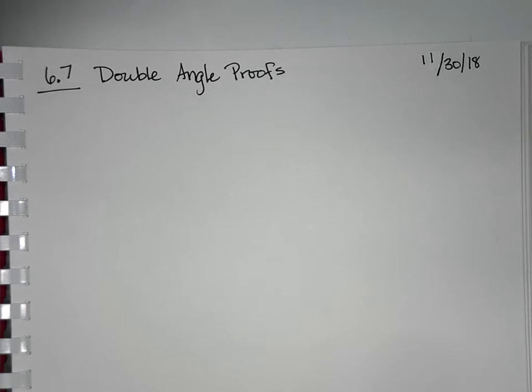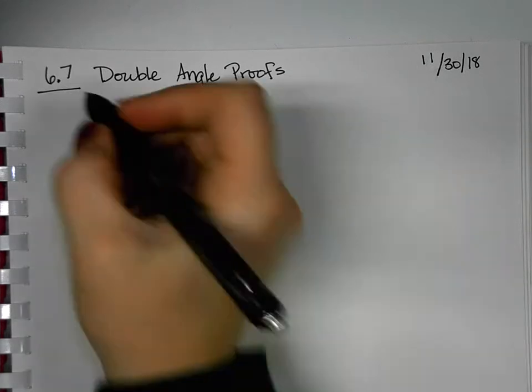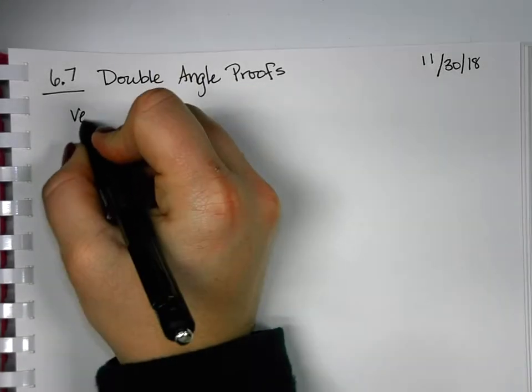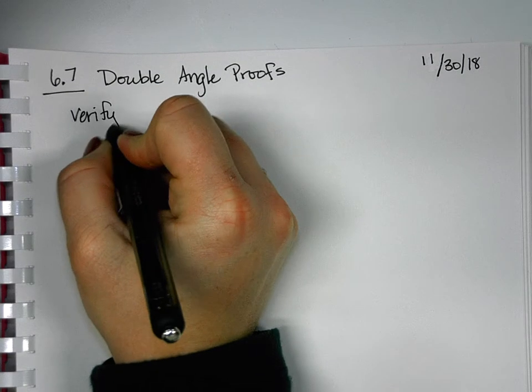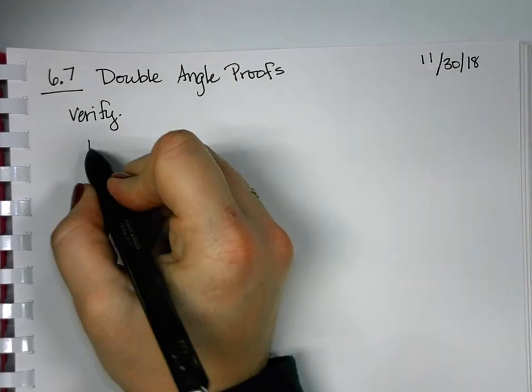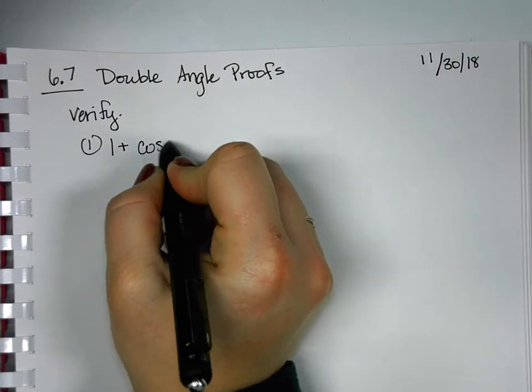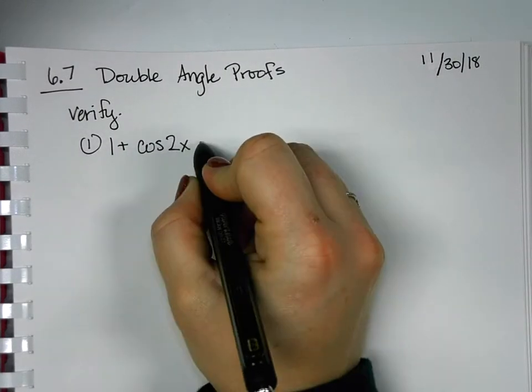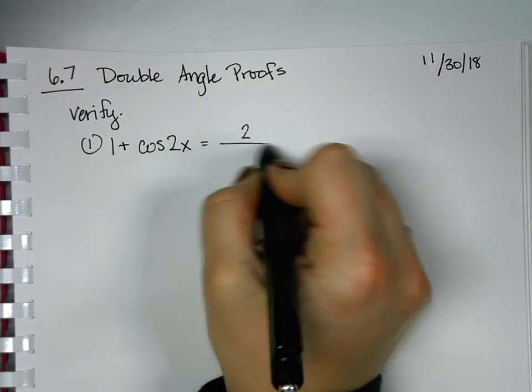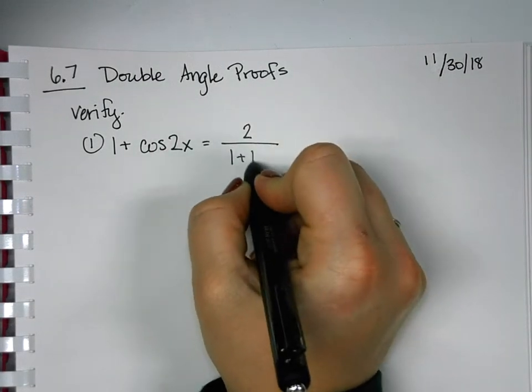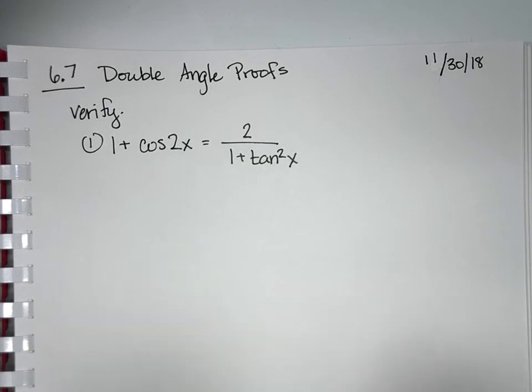Then I'm going to charge you with trying to figure out an alternate method on one of them, and we'll do one more in class tomorrow or Monday. Just like with any other proofs, our directions are to verify. Our first one here: 1 + cos 2x equals 2 over 1 + tan²x.